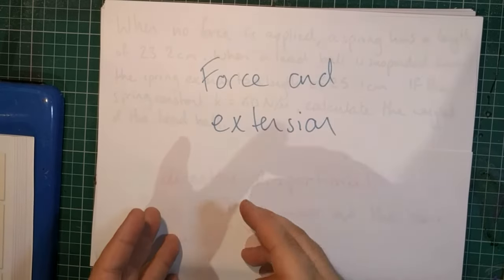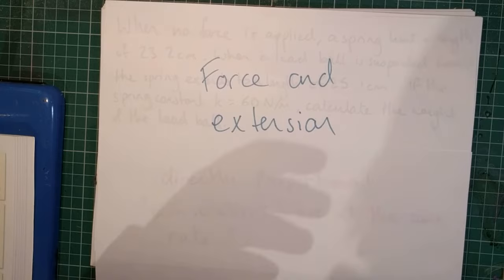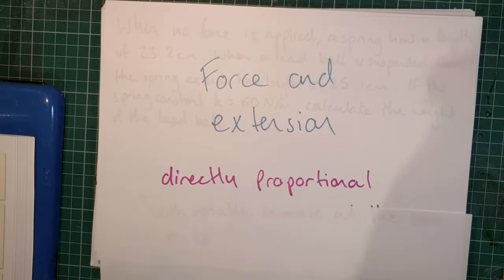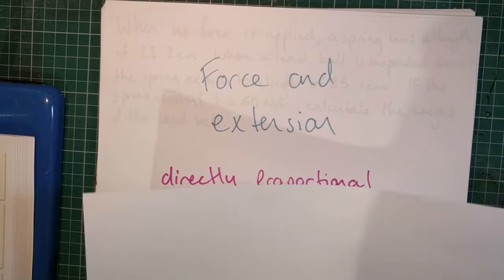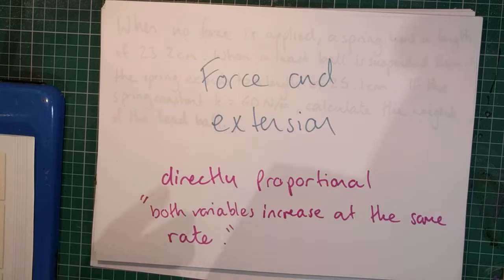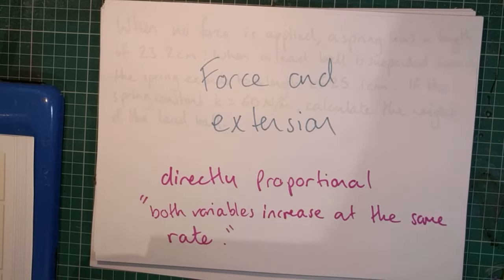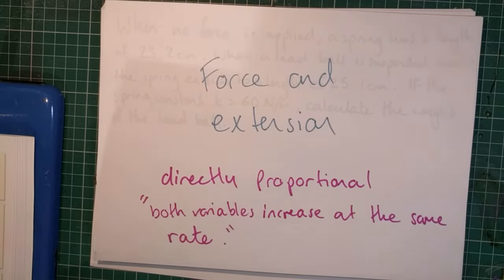Now, the force applied to an object and its extension are directly proportional. And so that means that both variables will increase at the same rate. There's an important phrase to use when answering questions about the effect of force on extension of things like springs, because it describes their relationship and they are key words for GCSE physics and GCSE combined science.